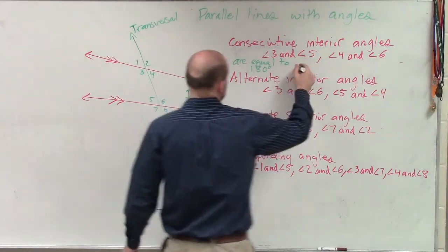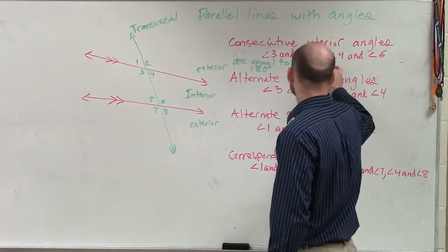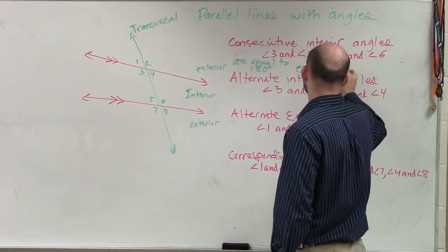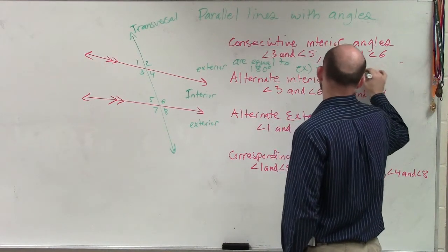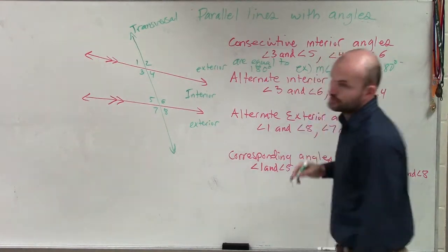Very good. So you could say an example would be the measure of angle 3 plus the measure of angle 5 equals 180 degrees.